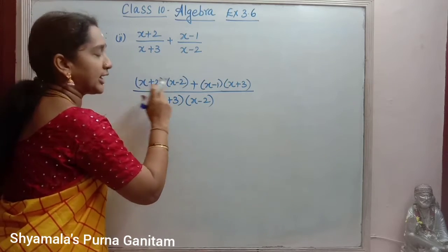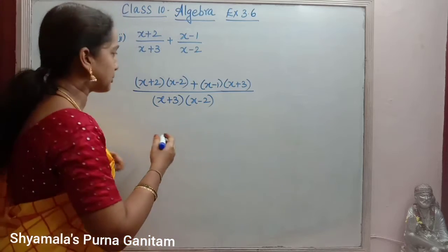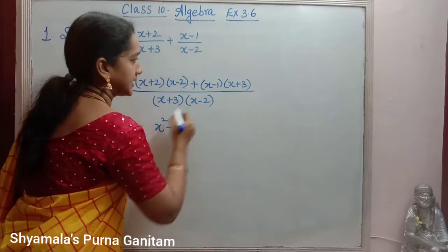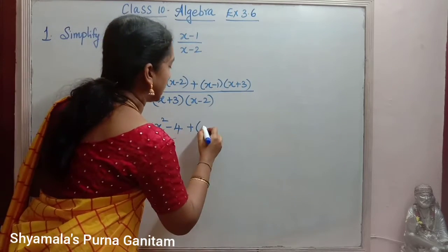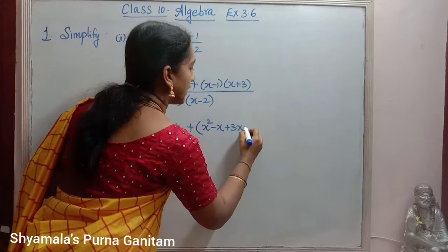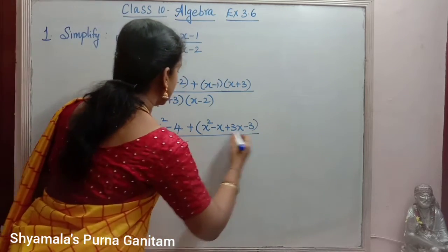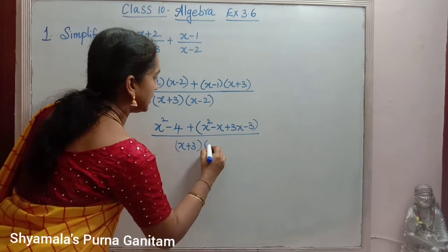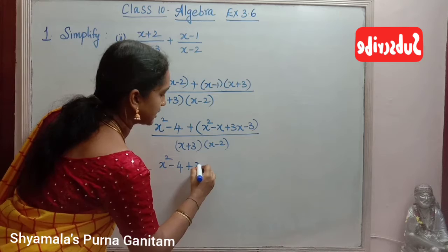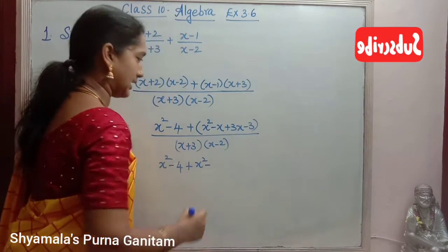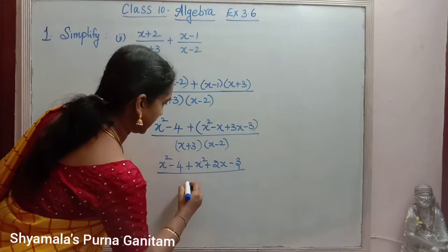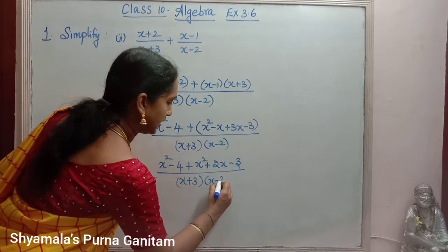Now we simplify. For (x+2)(x-2), this matches the identity (a+b)(a-b) = a squared minus b squared, giving x squared minus 4. For (x-1)(x+3), multiplying out: x times x is x squared, minus 1 times x is minus x, 3 times x is plus 3x, and 3 times minus 1 is minus 3. The denominator is (x+3)(x-2).